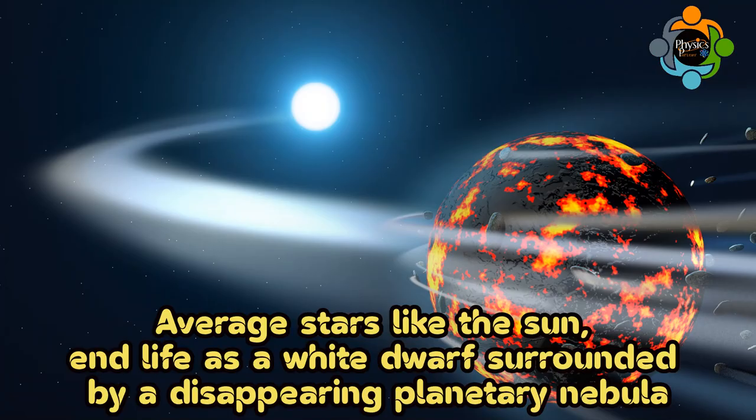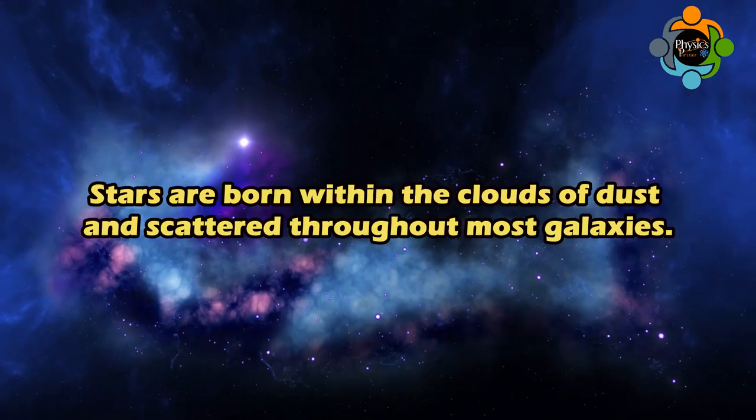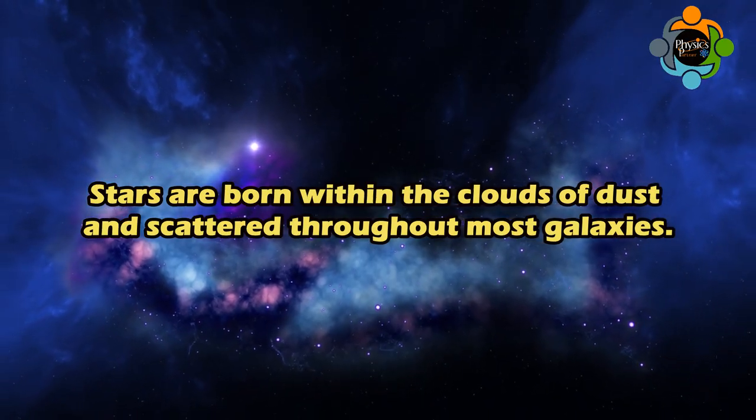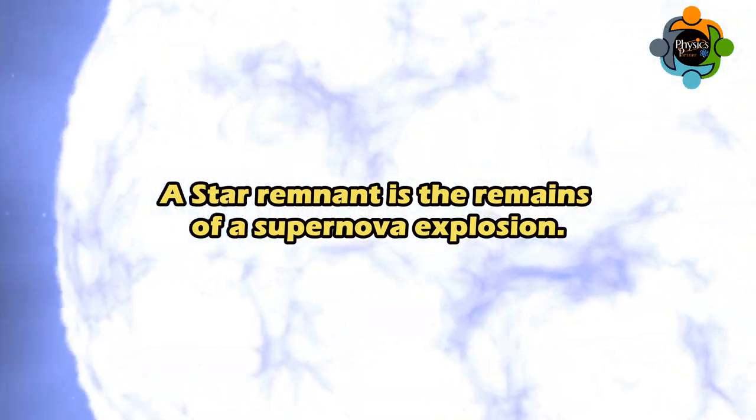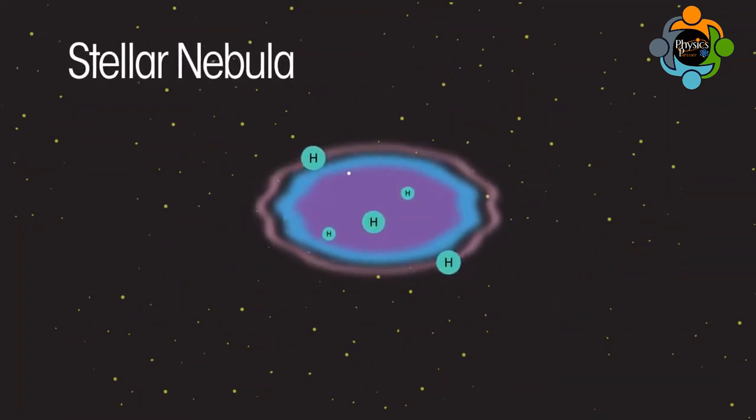Massive stars transform into supernovae, neutron stars, and black holes, whereas every star like the sun ends life as a white dwarf surrounded by a disappearing planetary nebula. All stars, irrespective of their sizes, follow the same life cycle. They start their life as a gas cloud and end as a star remnant. All stars start their life from gas and dust and turn into a nebula, which is actually a huge cloud of gas and dust.